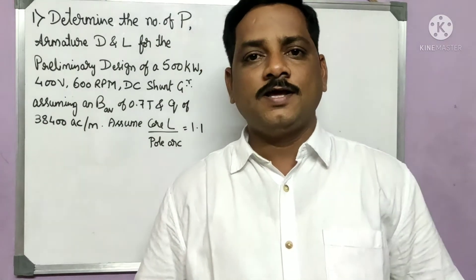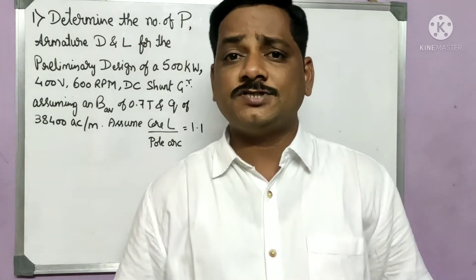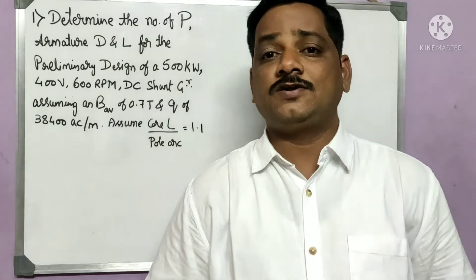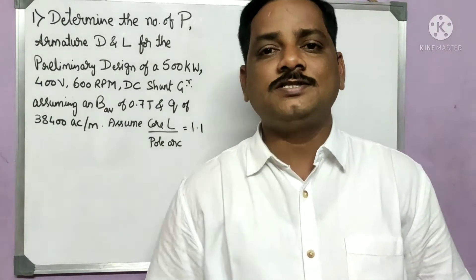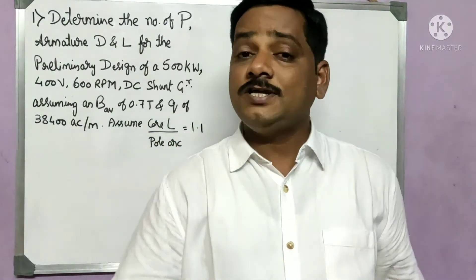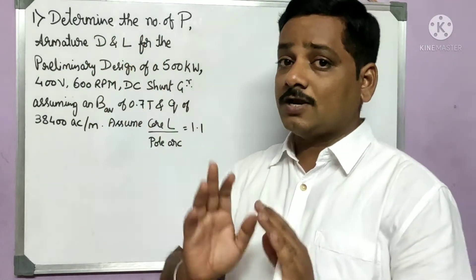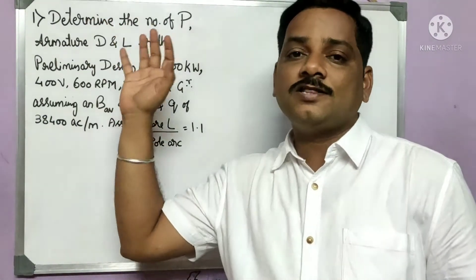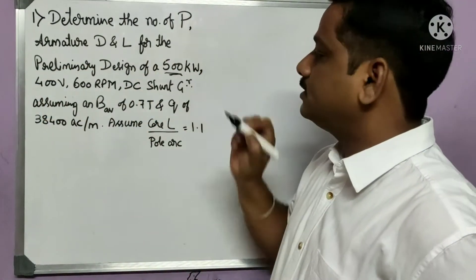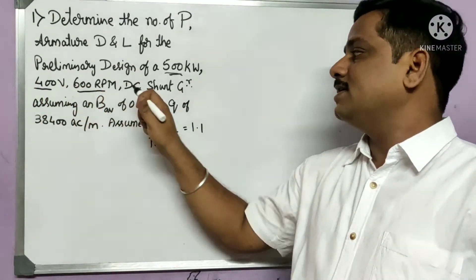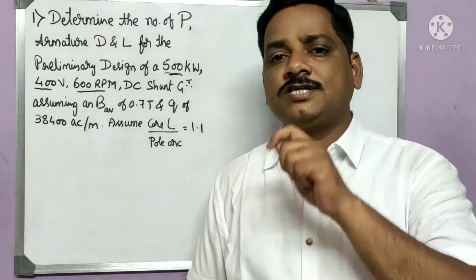Welcome to Knowledge Center. In this session I will explain the way of finding the number of poles for a DC machine. While designing a DC machine we have to make a decision on the number of poles. There are some rules based on which we select the number of poles. The example says: determine the number of poles, armature diameter and length for the preliminary design of a 500 kilowatt, 400 volt, 600 rpm DC shunt generator.